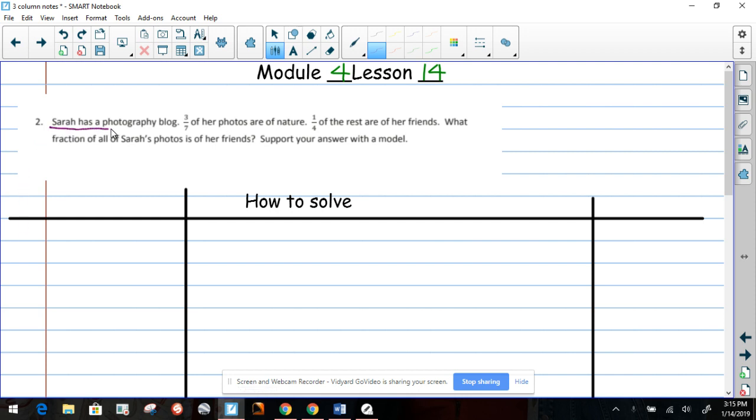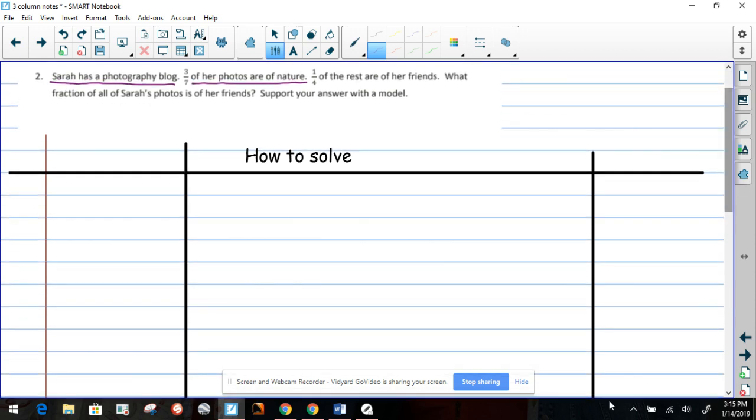Sarah has a photographic blog. Three-sevenths of her photos are nature. Okay, so let's show that. That one is only giving us information. So let's create a picture of what she's telling us. So that's information that we have. And it says that three-sevenths of those pictures are nature pictures. So we're going to label it nature. So we're going to show it on this chart. So now that's seven. So let's do six parts.